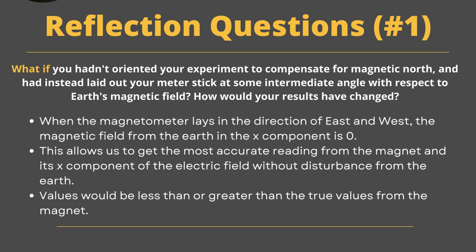For reflection questions: What if we hadn't oriented our experiment with the ruler and meter stick east and west? The issue is that if we put it anywhere else, we would be dealing with some issues with the Earth's magnetic field. Because of this, it would actually mess with some of our calculations in the x components and y components and z components of our magnetic field.